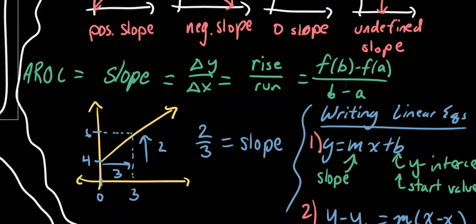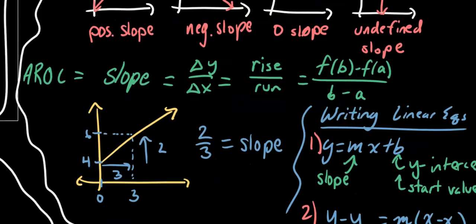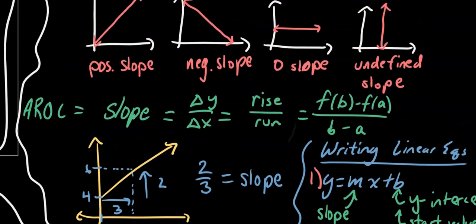Slope, which is also known as the average rate of change, or AROC, is change in y over change in x — rise over run. It can also be found by taking the y value at some x value b, minus the y value at some x value a, over b minus a. This is really just saying change in y over change in x in a different way.